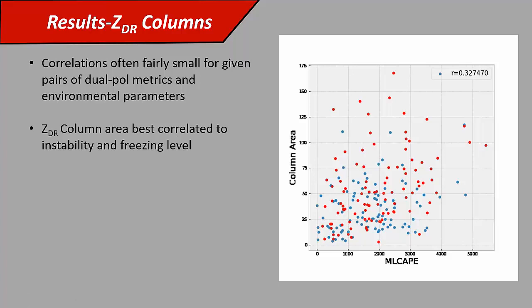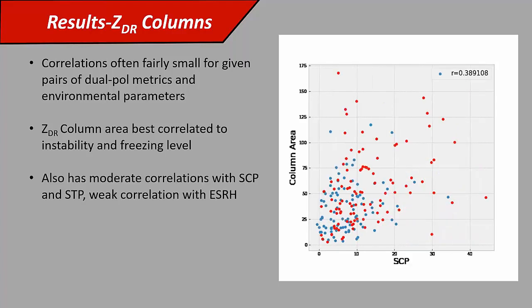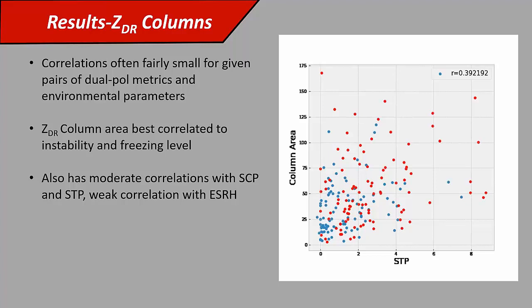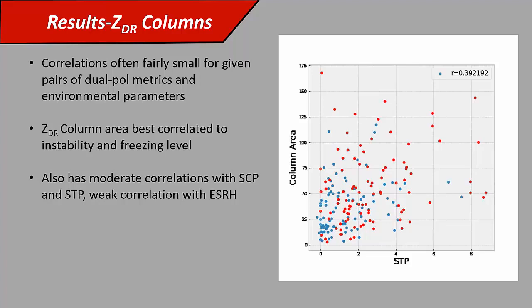Looking at ZDR columns, the best two individual variables that seem to control ZDR column size the most are instability. Mixed-layer CAPE here had an R value of about 0.32. Generally speaking, there's a ton of scatter, but you do seem to have a bit of a tendency to have larger columns with larger CAPE and higher freezing level. You can see that it's pretty uncommon to have large ZDR columns when the freezing level is very low. There were also some moderate correlations with SCP and STP, the composite parameters, supercell composite and significant tornado.